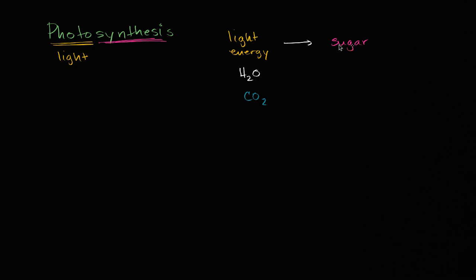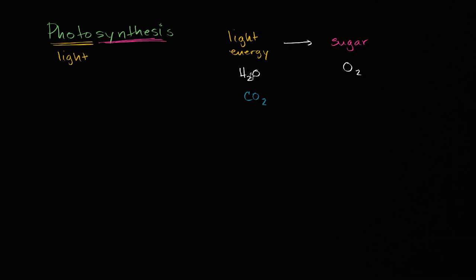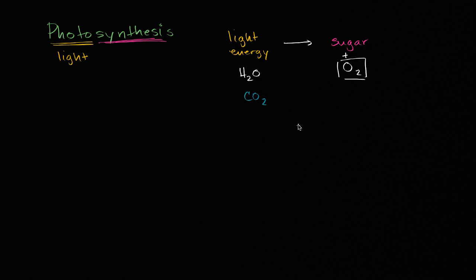Sugar isn't the only output. Another byproduct of this process is molecular oxygen. Once you strip a couple of electrons from the water, and the hydrogen ions are stripped away as well, all you're left with is oxygen. Do that twice and you have O2 — molecular oxygen. This is a byproduct of photosynthesis, and it's very important to life on Earth as we know it. We would have trouble breathing if this was not a byproduct of photosynthesis.